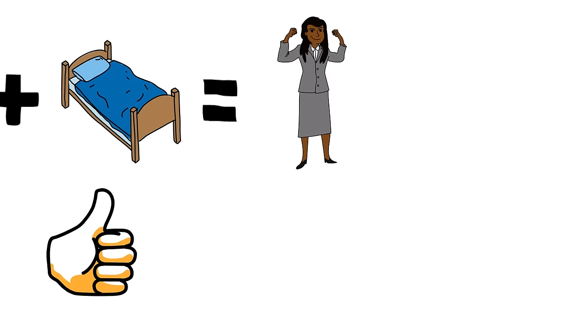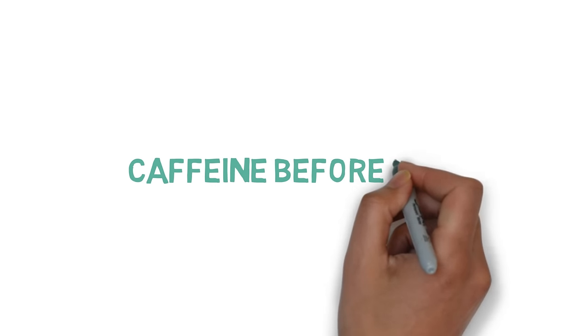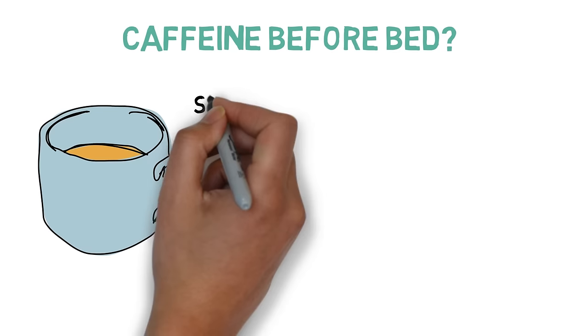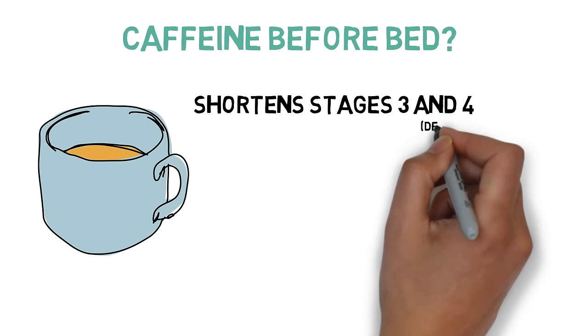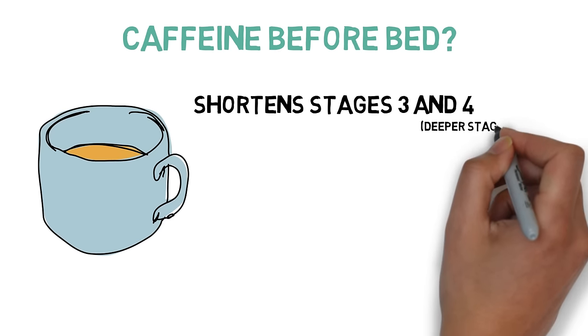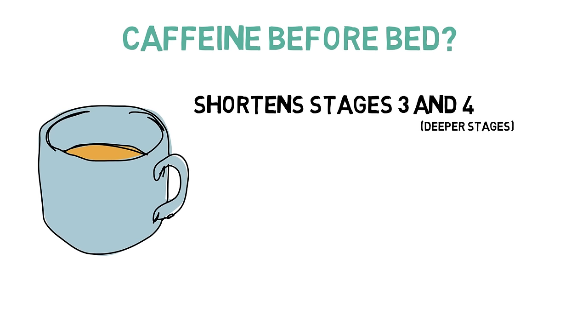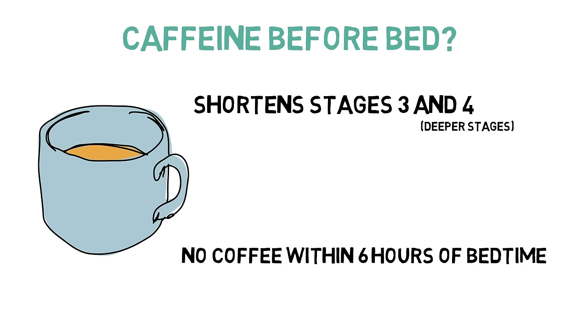While coffee naps are a good idea, consuming caffeine before bedtime is not going to do you any favors. Caffeine shortens phases 3 and 4 of the sleep cycle, which are deeper phases of sleep. Studies have shown that caffeine even 6 hours before bedtime has a significant effect on sleep disturbance.